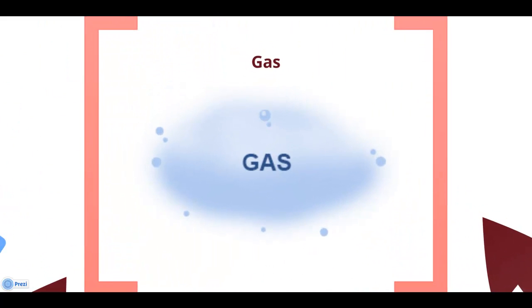In gases, the molecules are very far apart and move randomly. In the gas state, the molecules have the greatest amount of energy, which keeps the molecules in constant motion.